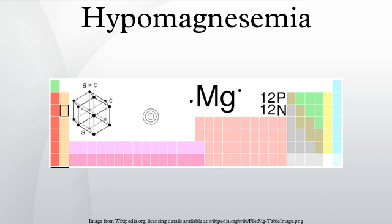Hypomagnesemia is an electrolyte disturbance in which there is an abnormally low level of magnesium in the blood. Normal magnesium levels in humans fall between 1.5 to 2.5 milligrams per deciliter. Usually a serum level less than 0.7 millimoles per liter is used as reference for hypomagnesemia.